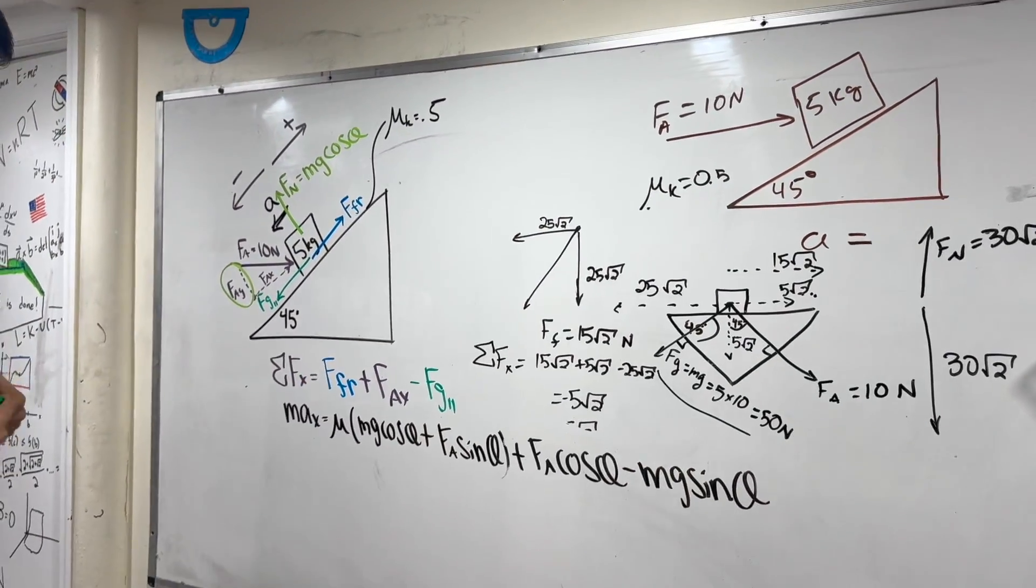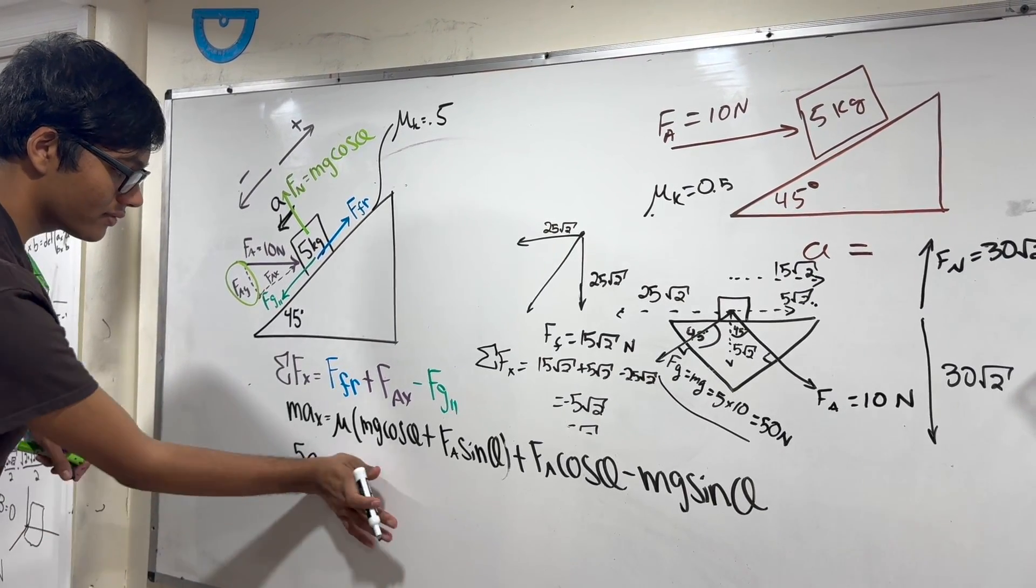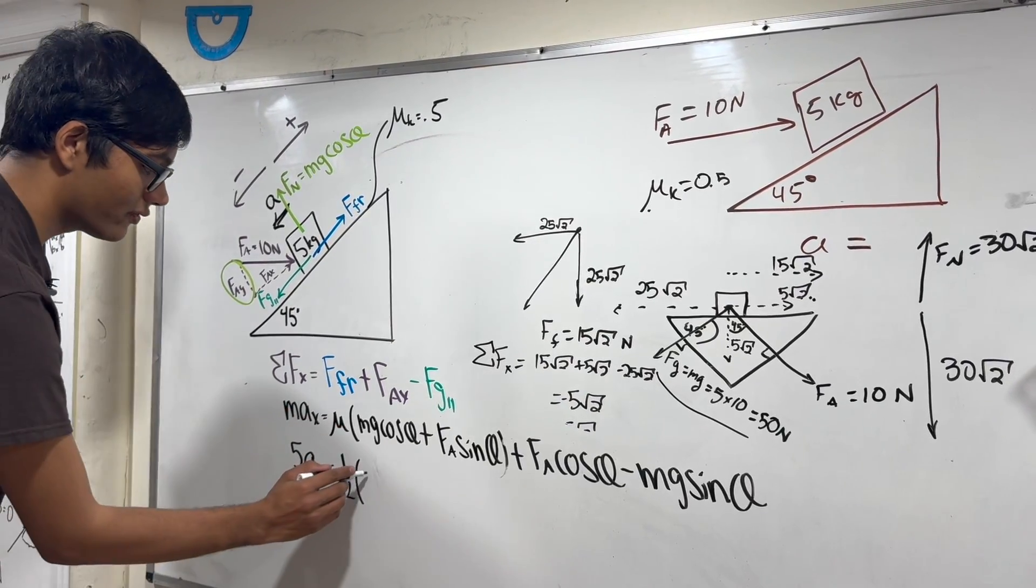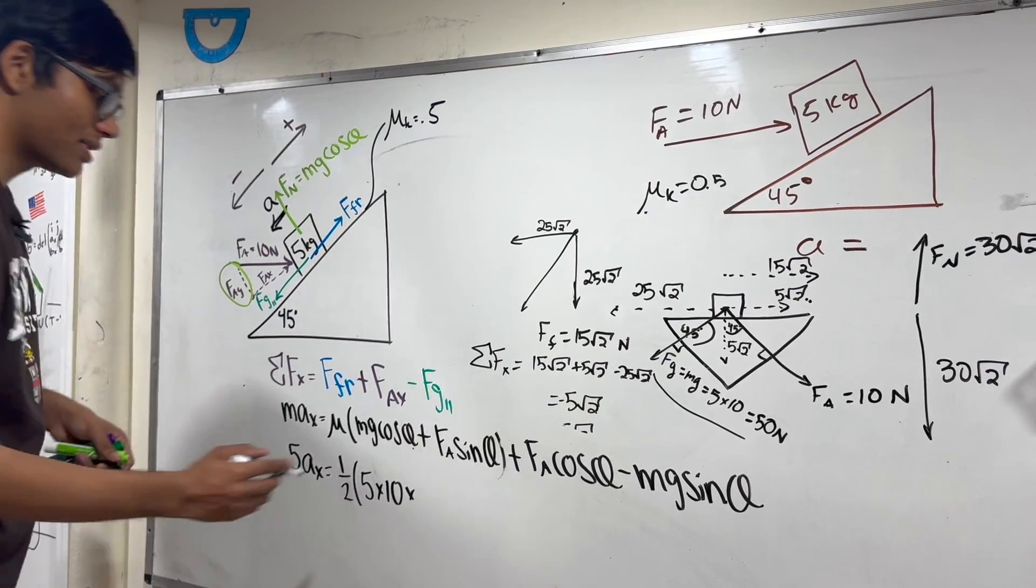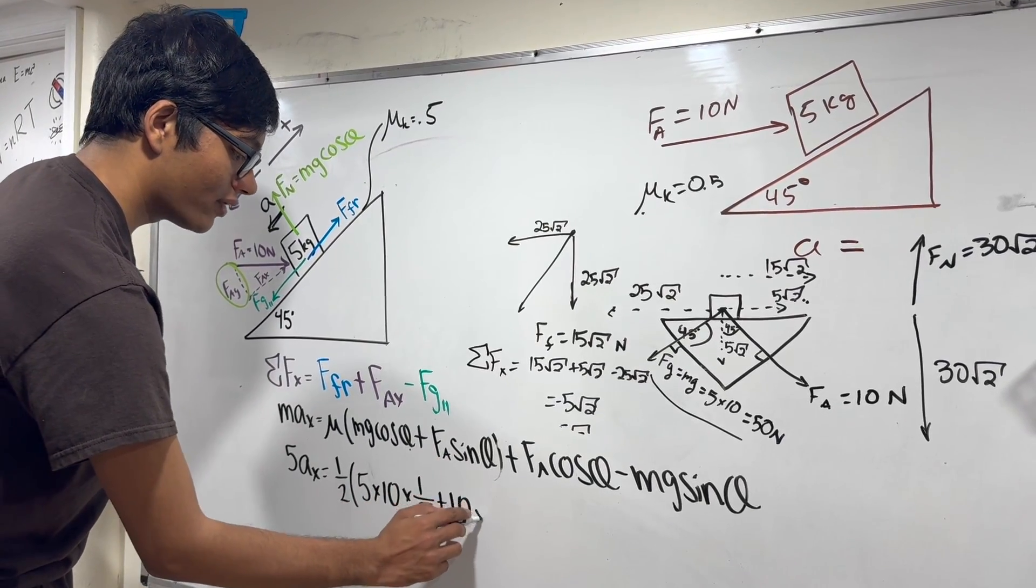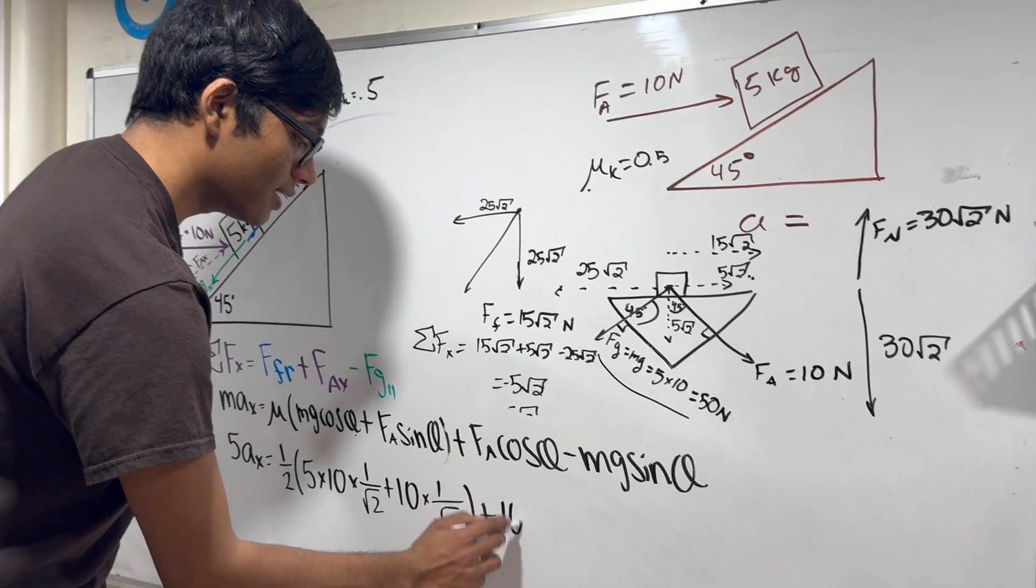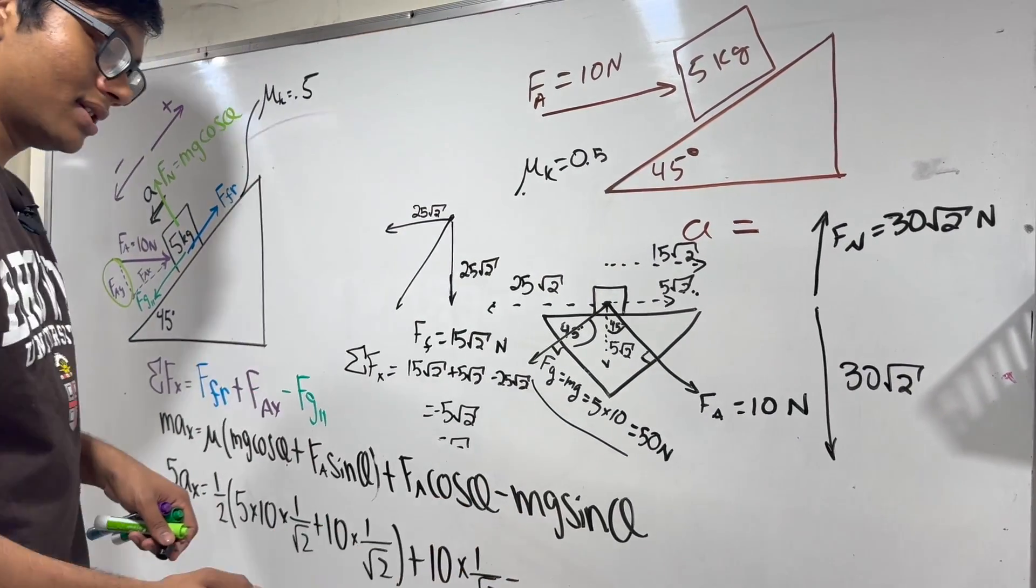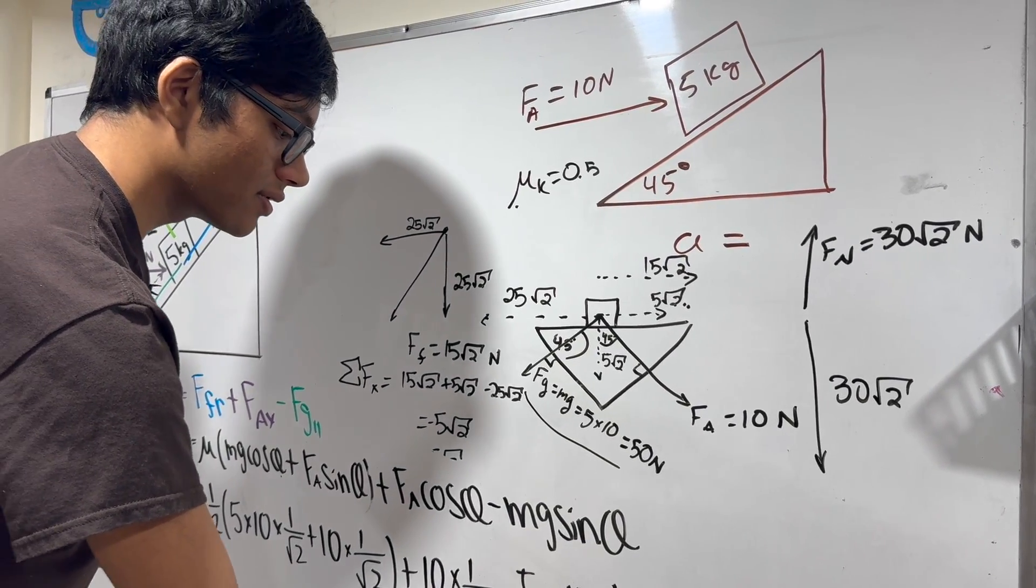M is 5. Mu is 0.5, actually it'll be easier if I just write half. M is 5, G is 10. Theta is 45. Cosine of 45 is 1 over the square root of 2. FA is 10. Sine of 45 is 1 over the square root of 2. Plus FA is 10, cosine of 45 is 1 over the square root of 2. Minus M is 5, G is 10, sine of 45 is 1 over the square root of 2.